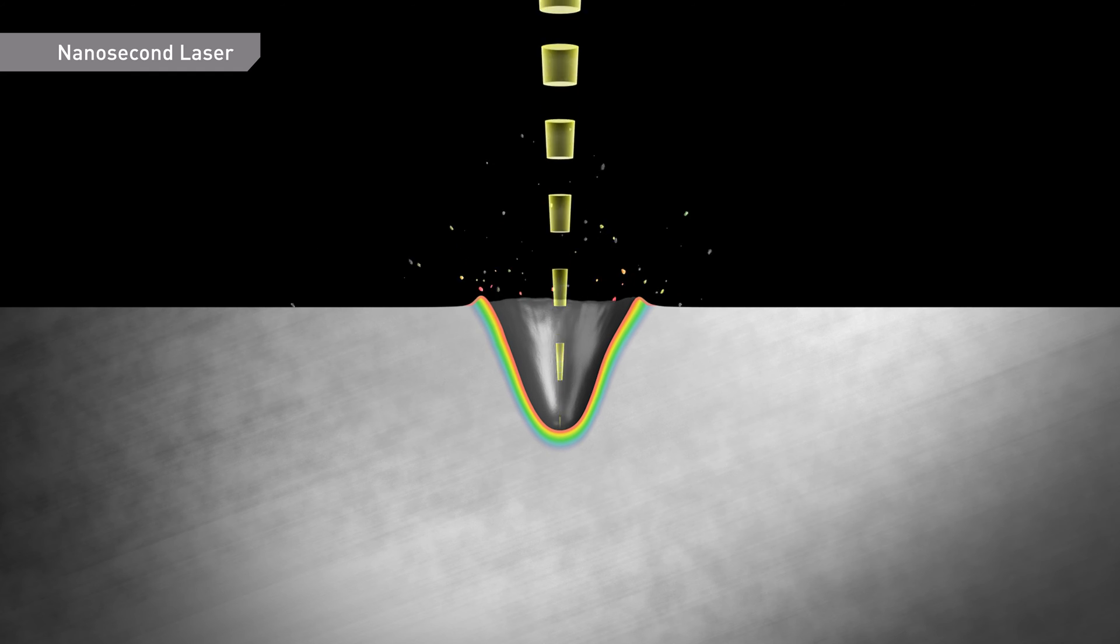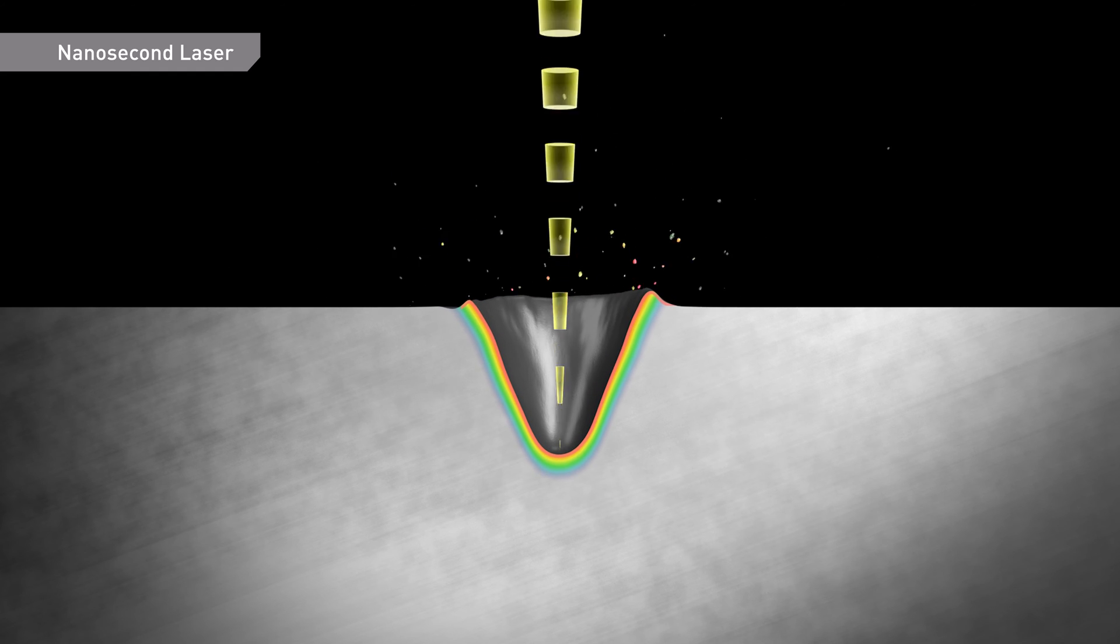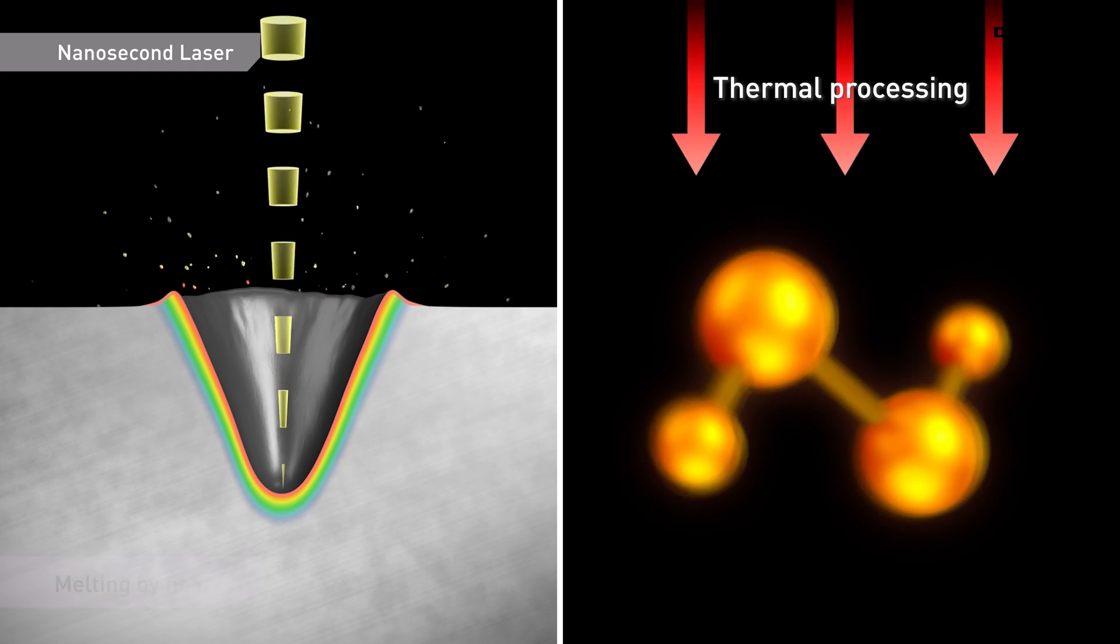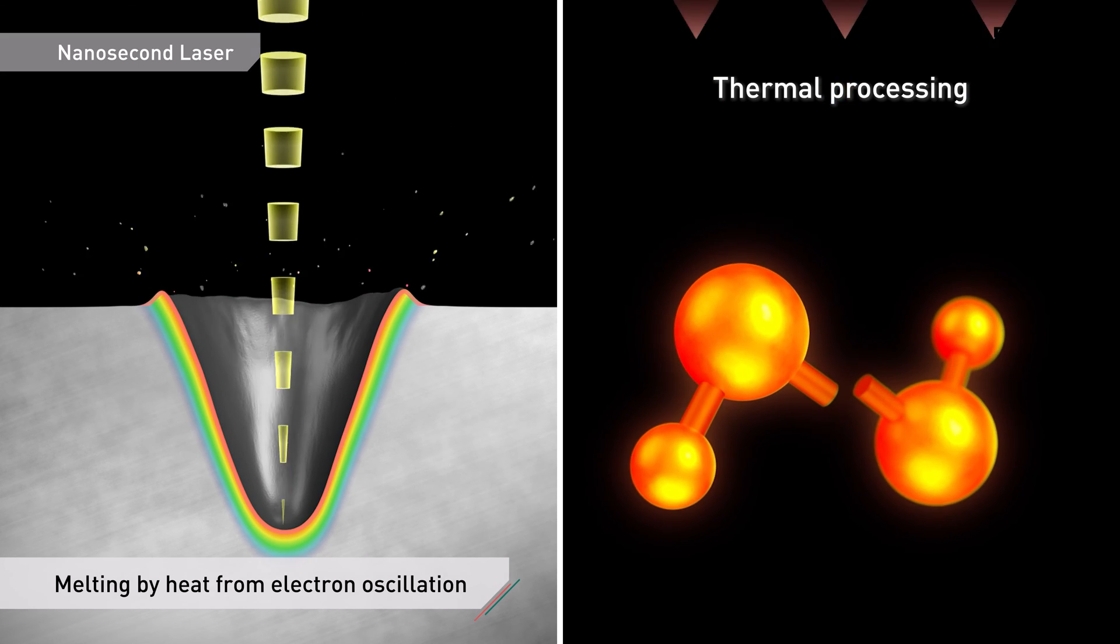A nanosecond laser has a short pulse time, but the small amount of heat generated on the workpiece surface affects the processed surface.